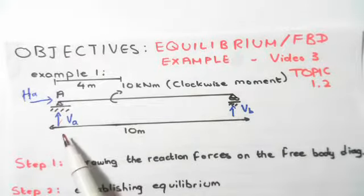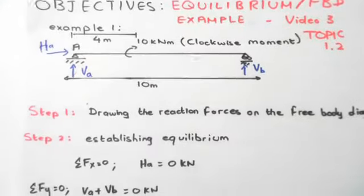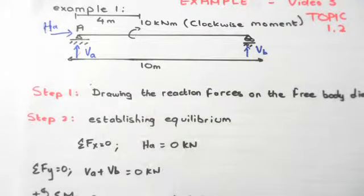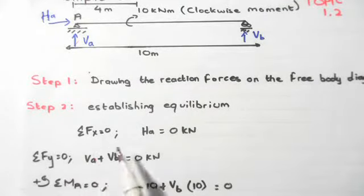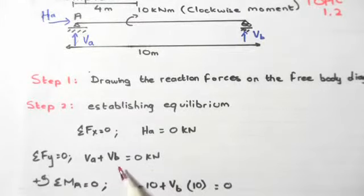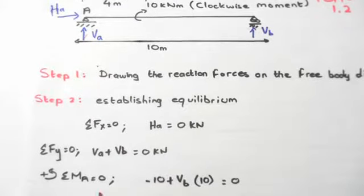Next, sum of forces in the y-direction equals zero. Va plus Vb equals zero, since they are the only two vertical forces. We now have two unknowns in one equation, so we need to use moments to work out Va and Vb.